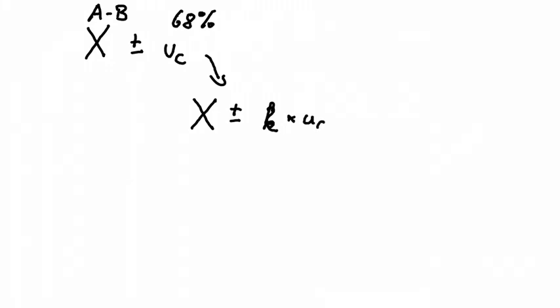So let's say we have our measurement, which was A minus B plus minus the combined standard uncertainties. These uncertainties would cover about 68%. If we want to be more certain, we can write it as X plus minus k times uc. And this is our coverage factor.